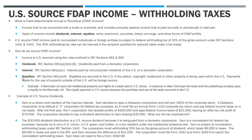Lastly, rounding out our big three — royalties. Under §861(a)(4), royalties are US sourced if the patent, copyright, trademark, or similar type of property is being used within the US. If a payment is made for use of property outside the US, it's foreign source. To clarify with an example: if a Bermuda limited company owns the IP to a book being sold in the US, and a customer in New York buys the book and the publishing company pays a royalty to the Bermuda company — that royalty is US source because the purchase and use of the book occurred in the US. It doesn't matter that the IP is owned by a foreign company; if it's being used in the US, the payment is US source income.